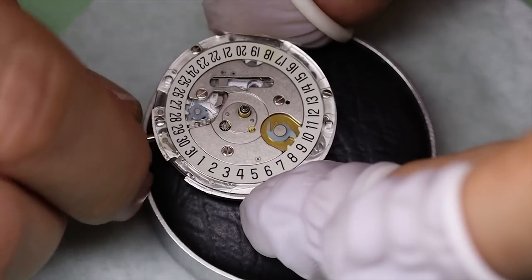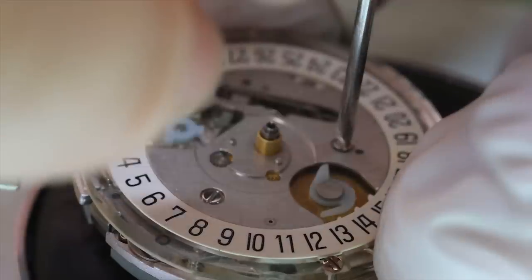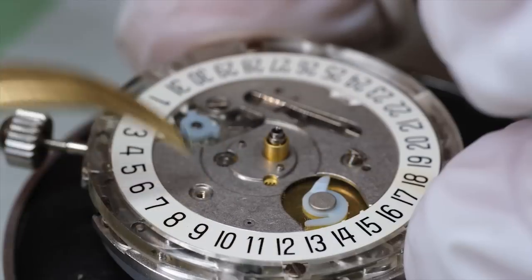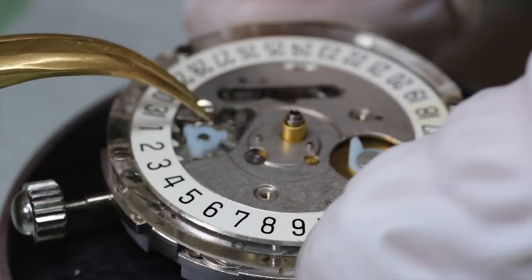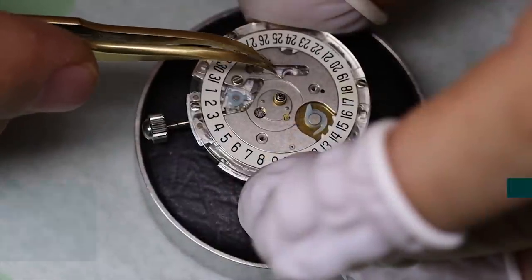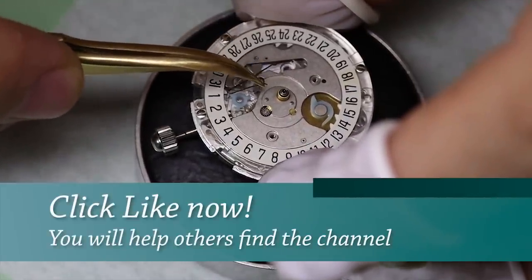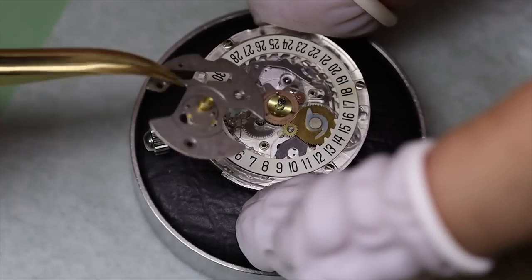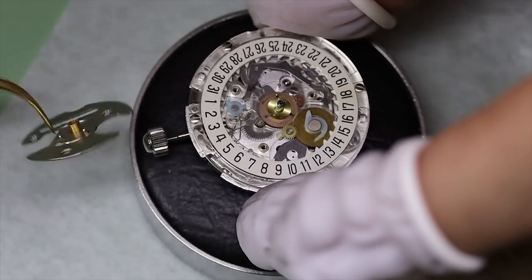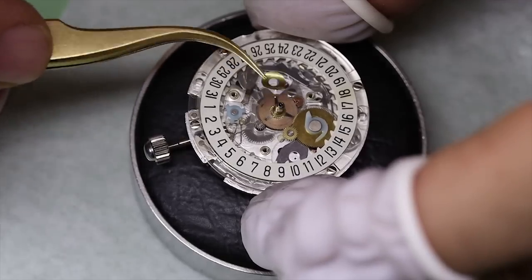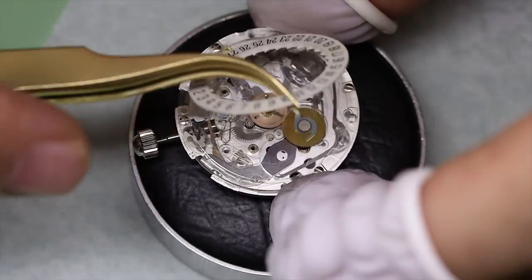While we take the dial off, we can finish this story about Sinn. So Helmut Sinn, he retired from Sinn the company in 1994 at the tender age of 78 years old, but he got bored. So the next year he started another brand and that was Chrono Sport.